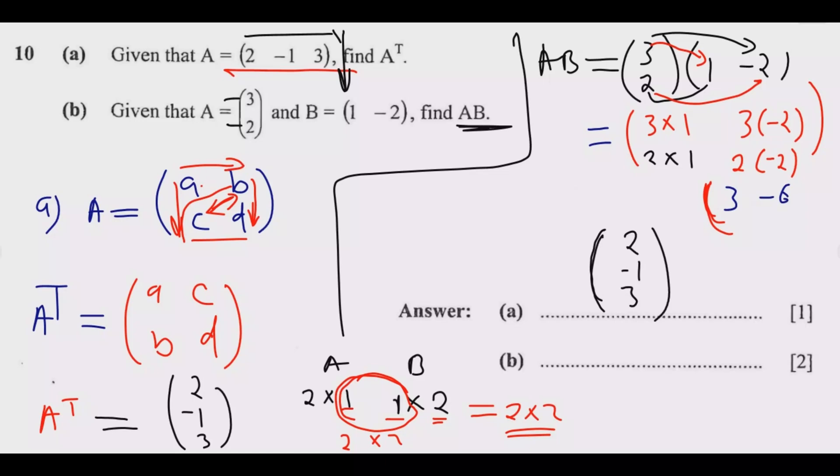Then go to the second row: 2 times 1 which is 2, then 2 times -2 which is -4. So our answer is a 2 by 2 matrix: (3 -6; 2 -4). Once you do that, you're good to go and get the three marks.